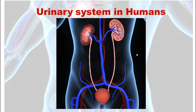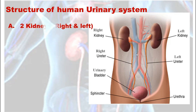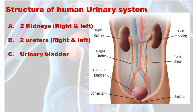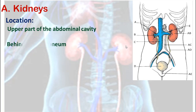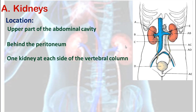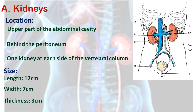Let's discuss in detail the urinary system in humans. It consists of two kidneys — right and left — two ureters, a urinary bladder, and a urethra. The kidneys are located at the upper part of the abdominal cavity, present behind the peritoneum. We have one kidney at each side of our vertebral column. The length of the human kidney is around 12 cm, the width is 7 cm, and the thickness is 3 cm.